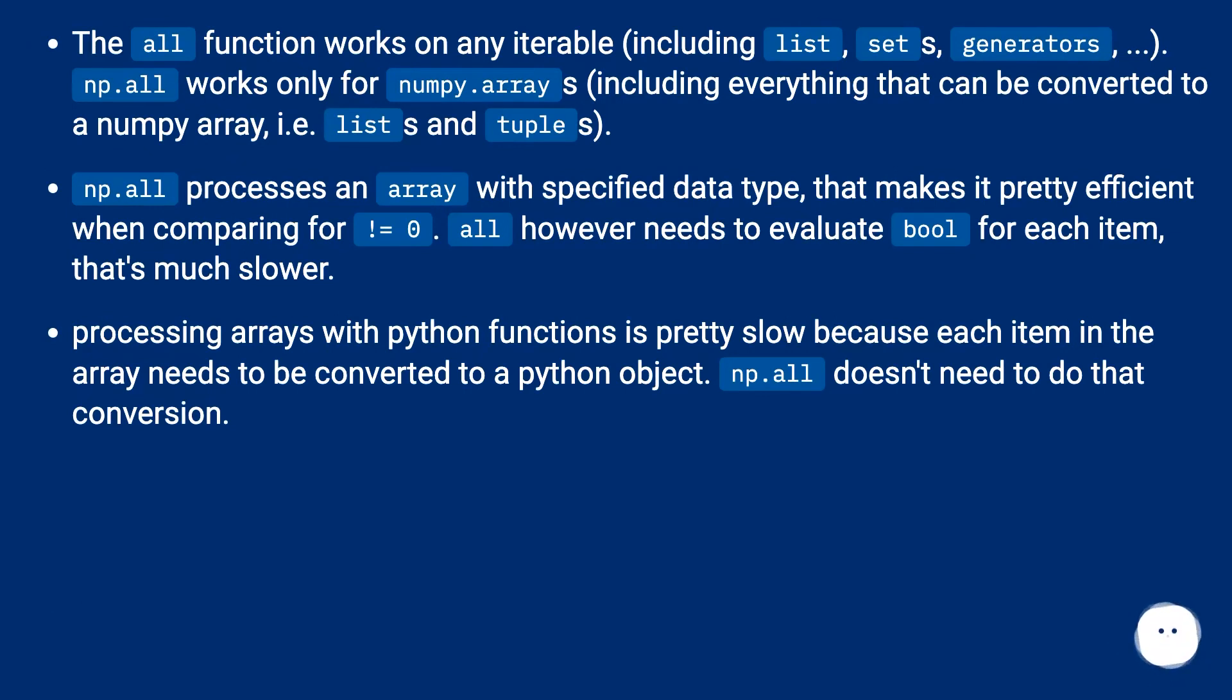np.all processes an array with specified data type, that makes it pretty efficient when comparing for not equal zero. all however needs to evaluate bool for each item, that's much slower.